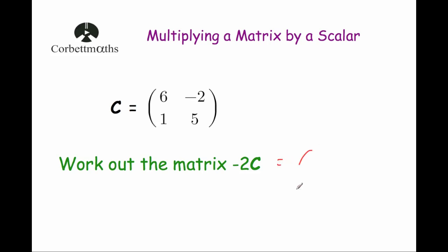So first of all we've got 6 — 6 times minus 2 would be minus 12, because a positive times a negative is a negative. We've got negative 2 — negative 2 times negative 2 gives 4, because a negative times a negative is a positive. We've got 1 times minus 2, which is minus 2. And 5 times minus 2 gives minus 10.